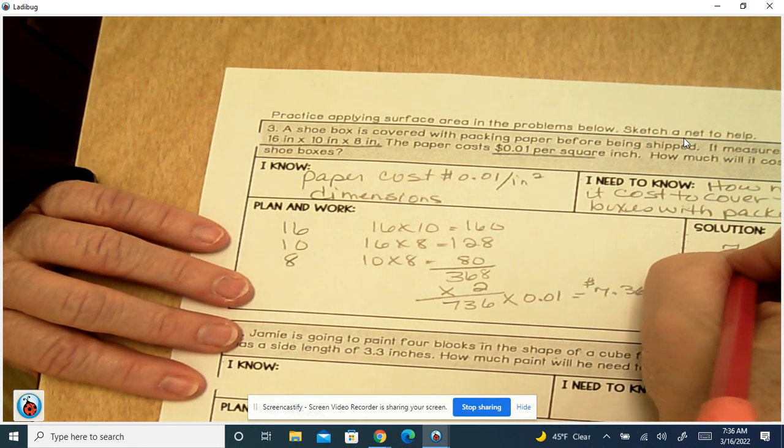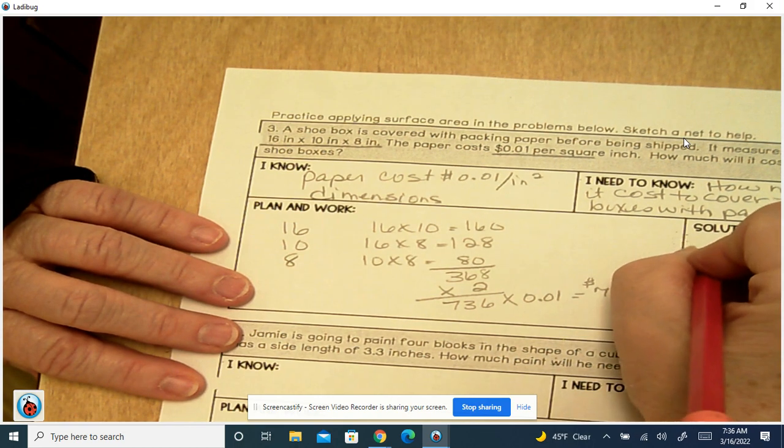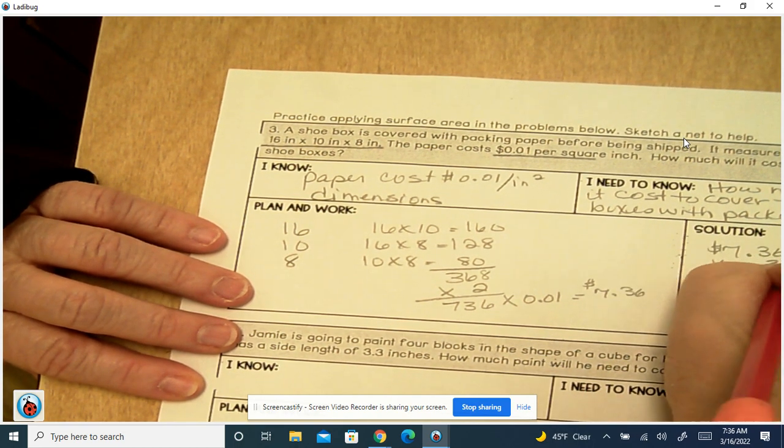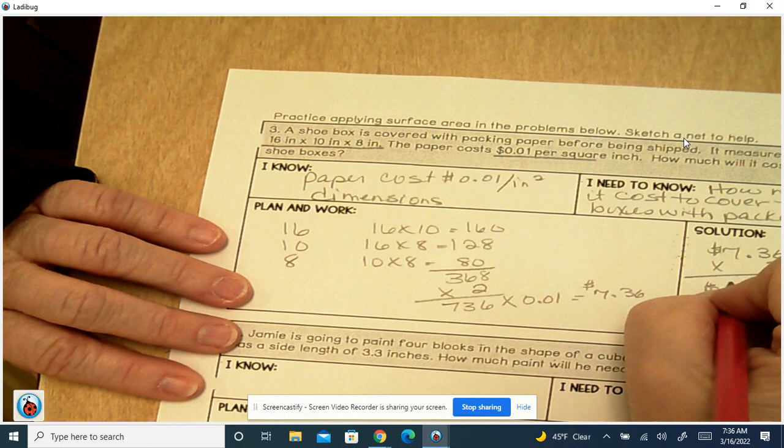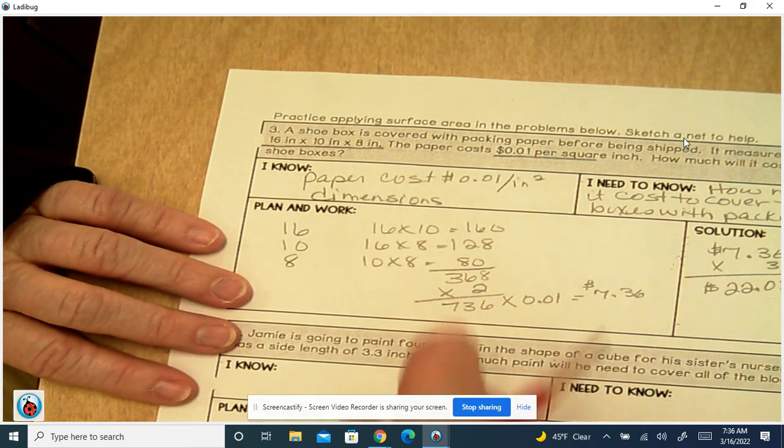Alright, so we take that 7.36 and multiply it by 3, and that's going to give us 22.08.